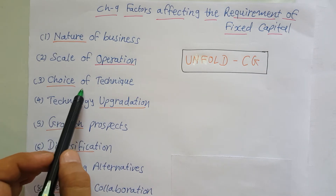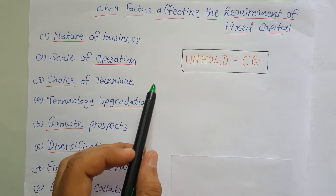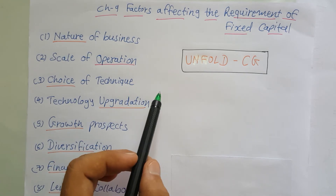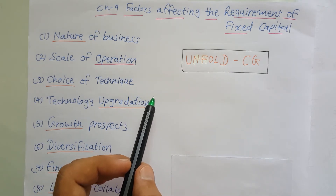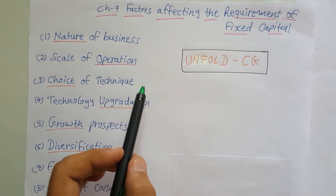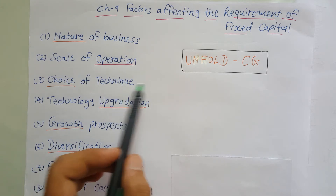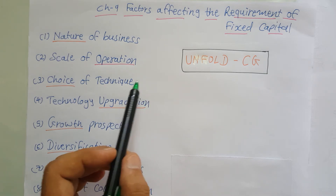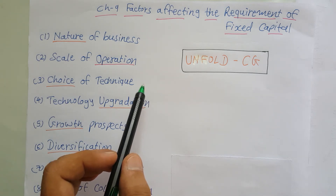Next is choice of technique. Some organizations go for the capital intensive technique and some go for the labor intensive technique. If you are going for the capital intensive technique, you need a higher investment in plant and machinery because they depend less on manual labor and their requirement of capital will also be higher. If you are going for the labor intensive technique, the organization has to invest less in fixed assets and hence their fixed capital requirement will also be low.